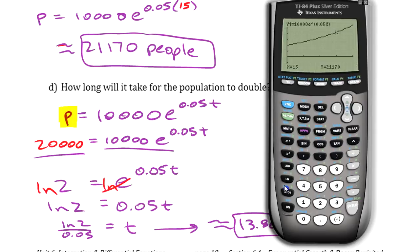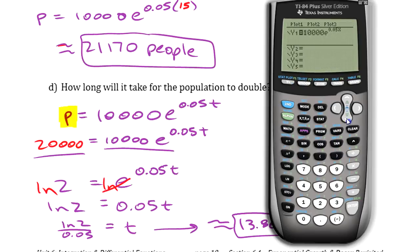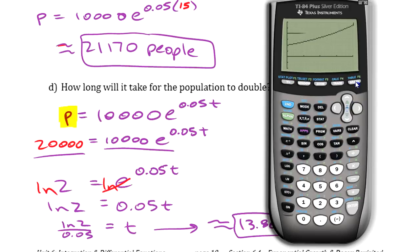If you want to find an x value by putting in a y value, it doesn't allow you to directly do it that way — the only way is by putting in another function. If we want to know how long it takes to get to 20,000, we put in Y2 = 20,000. We can look at the graph — it's going to draw a horizontal line — and we can find that intersection point.